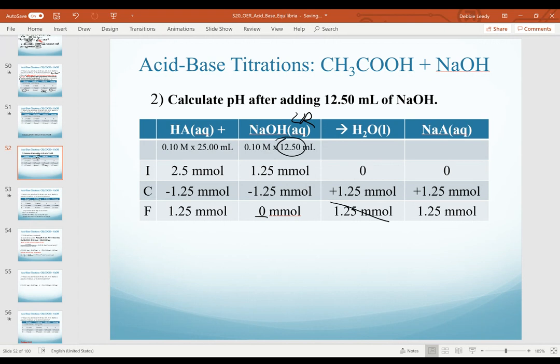Of course, water is produced, but it doesn't affect our pH. We still have excess weak acid, the acetic acid, and we have formed the salt of its conjugate base. Because we're still in the buffer zone, we can calculate our pH using our Henderson-Hasselbalch equation.